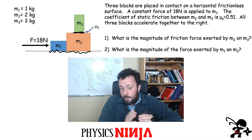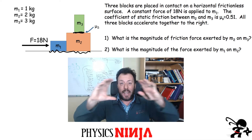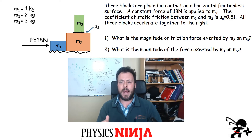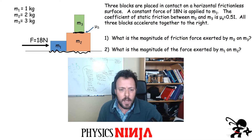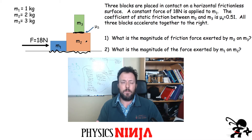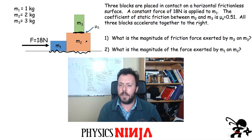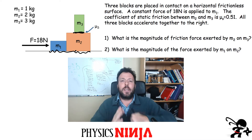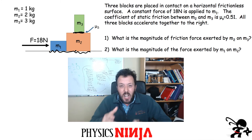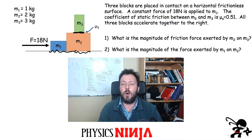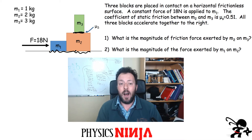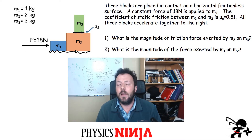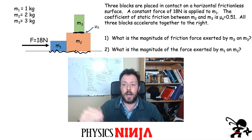Imagine it's sliding on a sheet of ice. As I push those blocks, they're going to accelerate together to the right. I've got two questions: what is the magnitude of the friction force acting between M2 and M3, and what is the contact force between M1 and M2 — the magnitude of this contact force between the two blocks? What I really like about this problem is there's a lot of different objects and a lot of forces on the free body diagram. Let's go ahead and set that problem up.